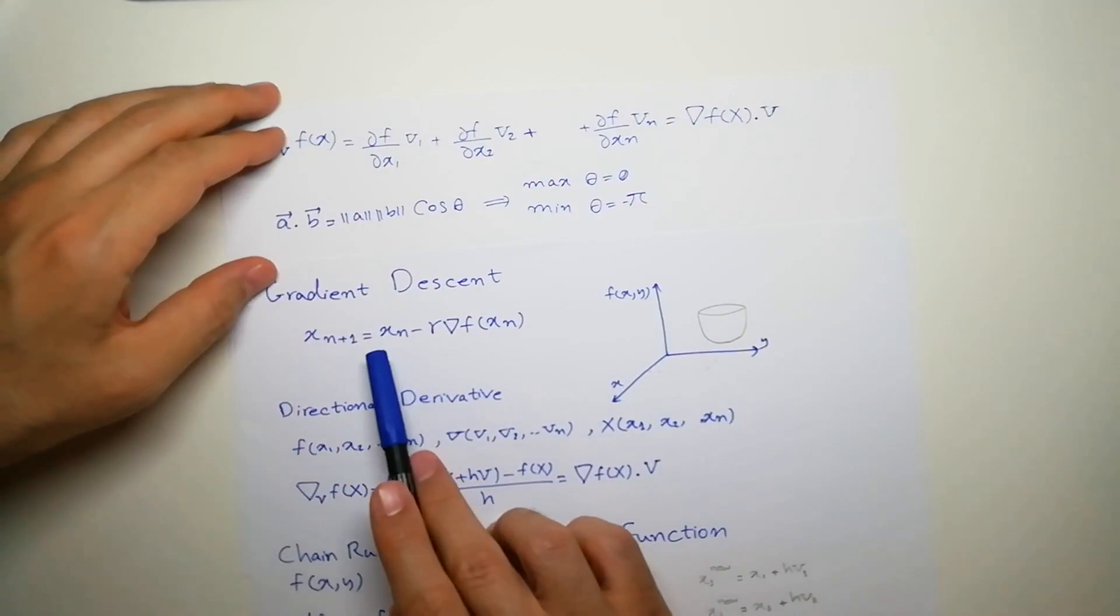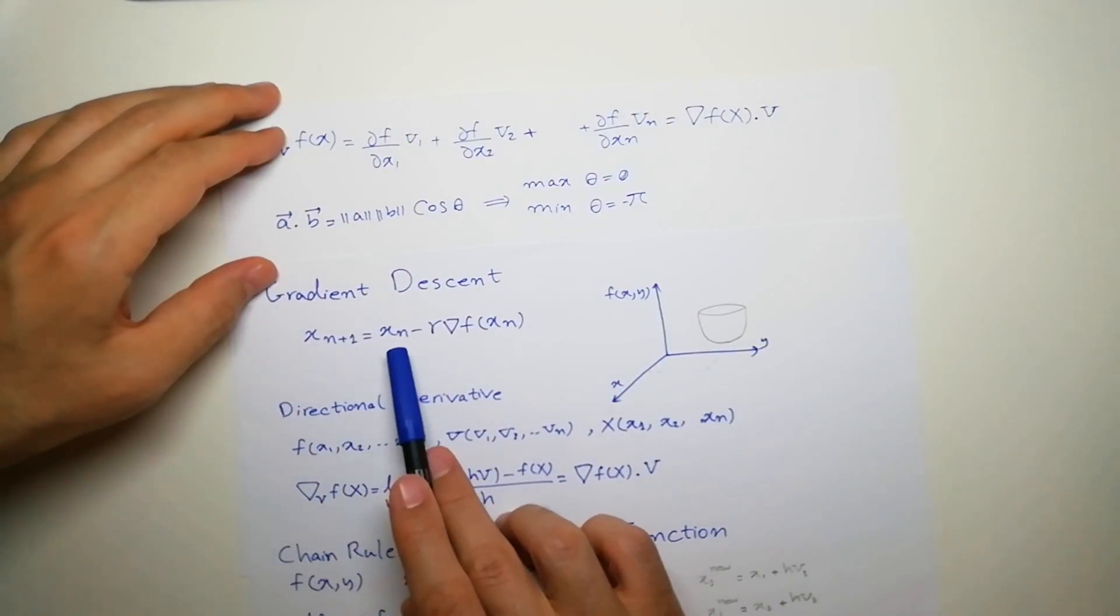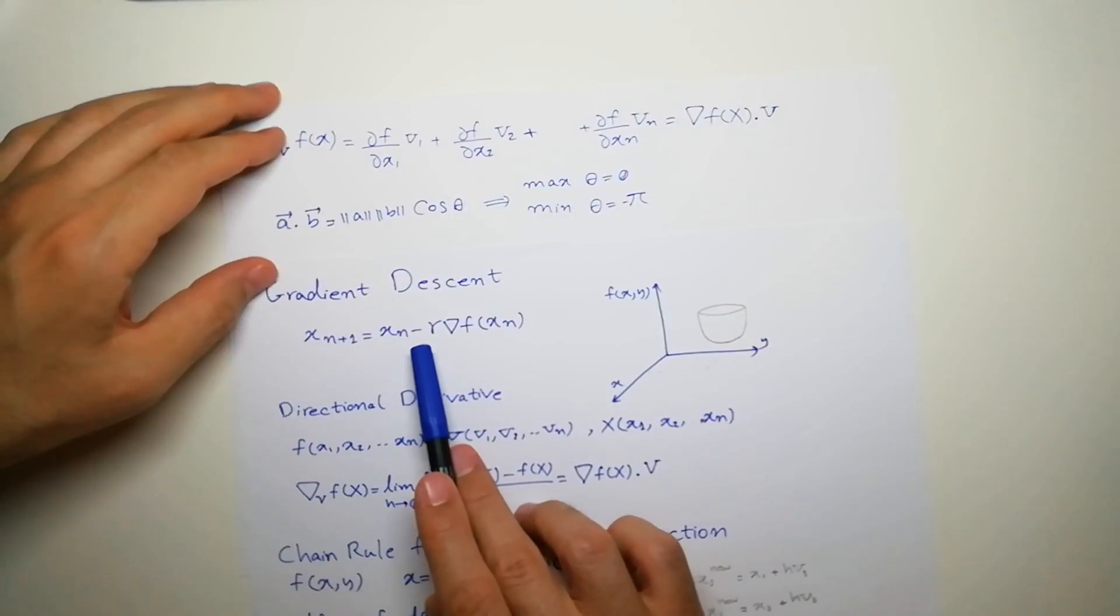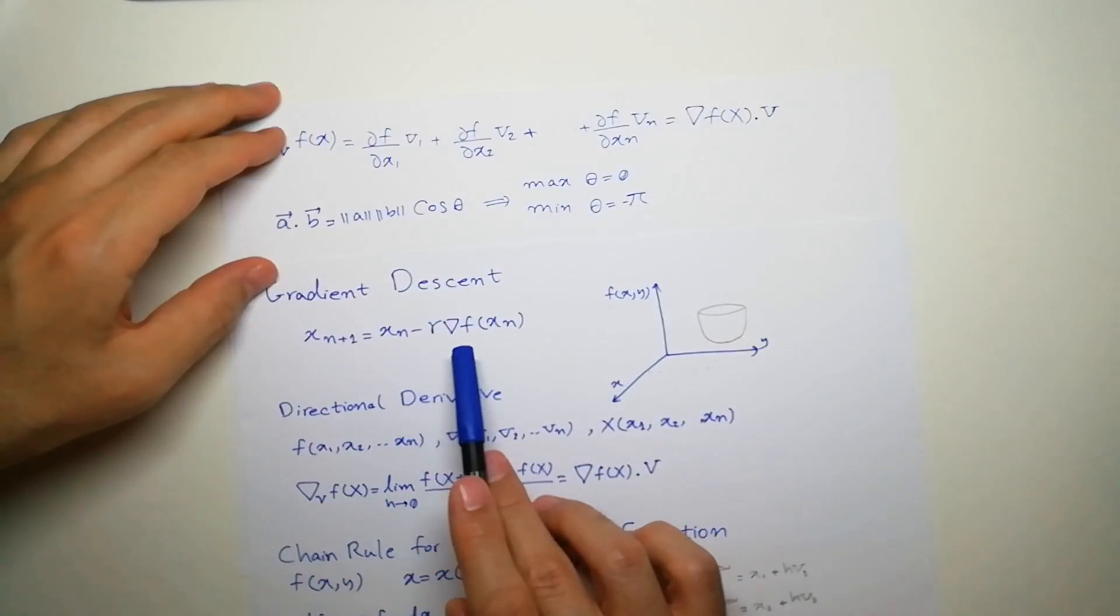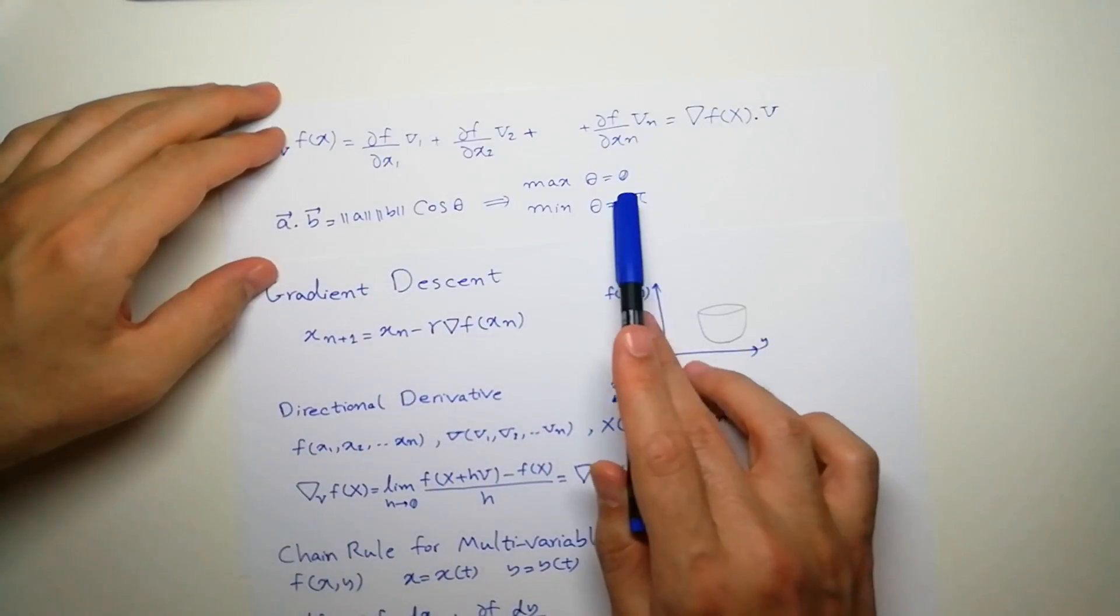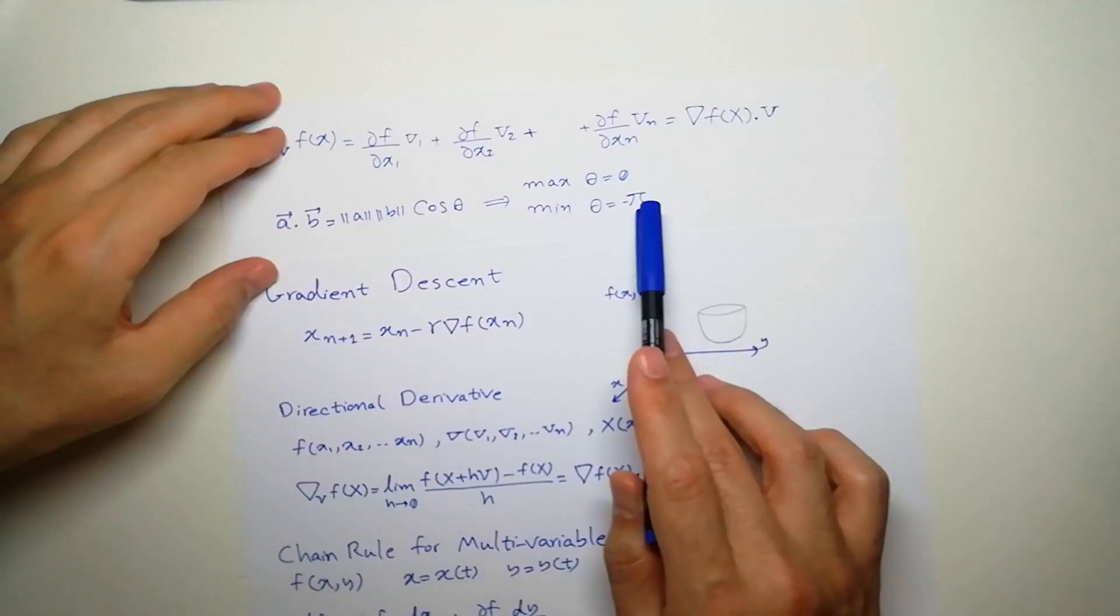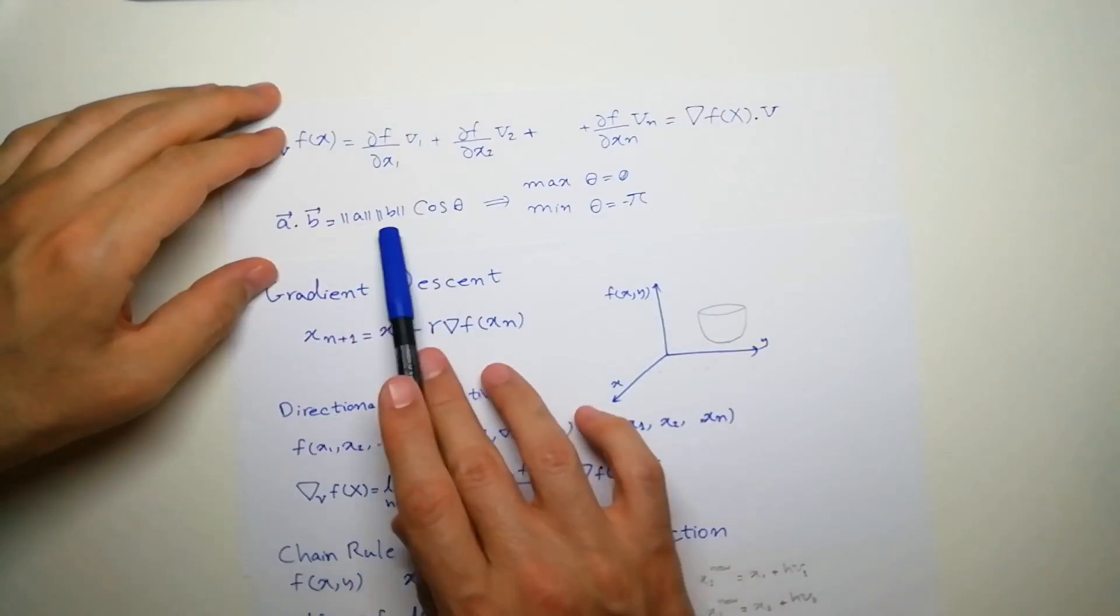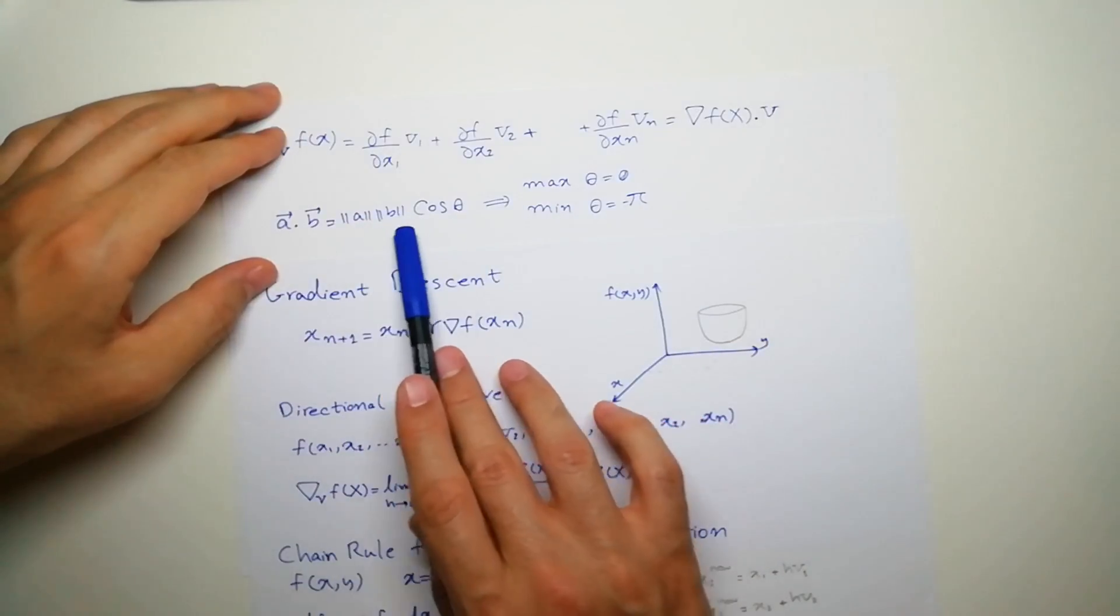So as you can see, our new point is the previous point minus the derivative of the function at that point, which we get from here, minus π, which gives us minus one, causing this equation to be minus one, which is the smallest value for that.